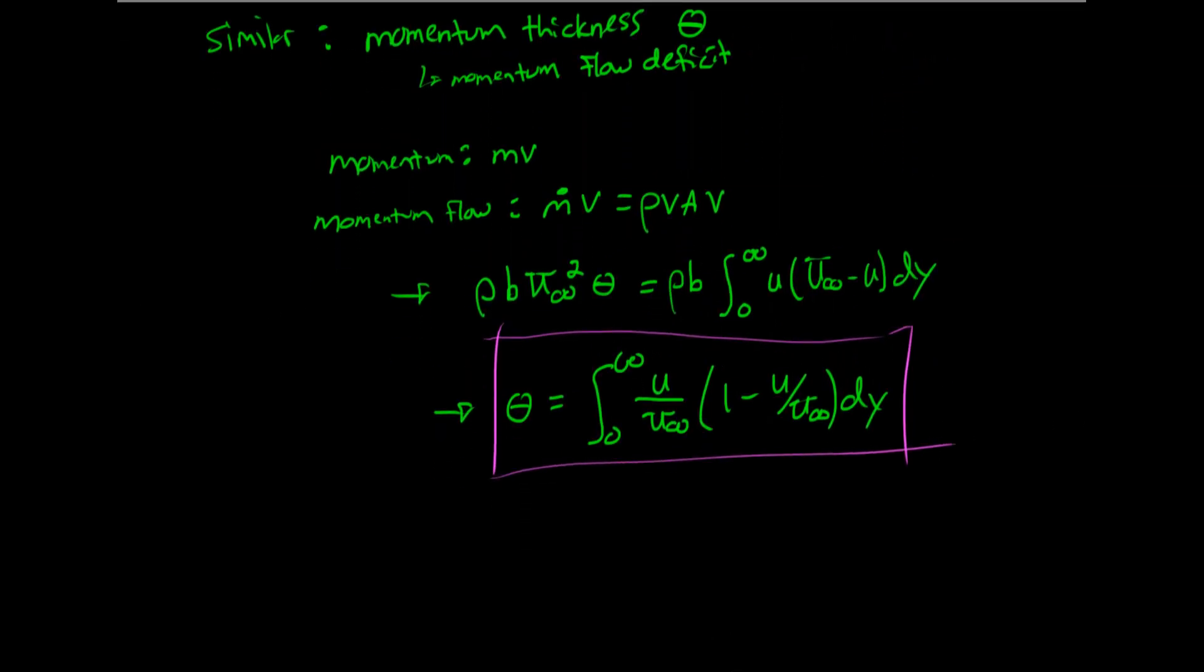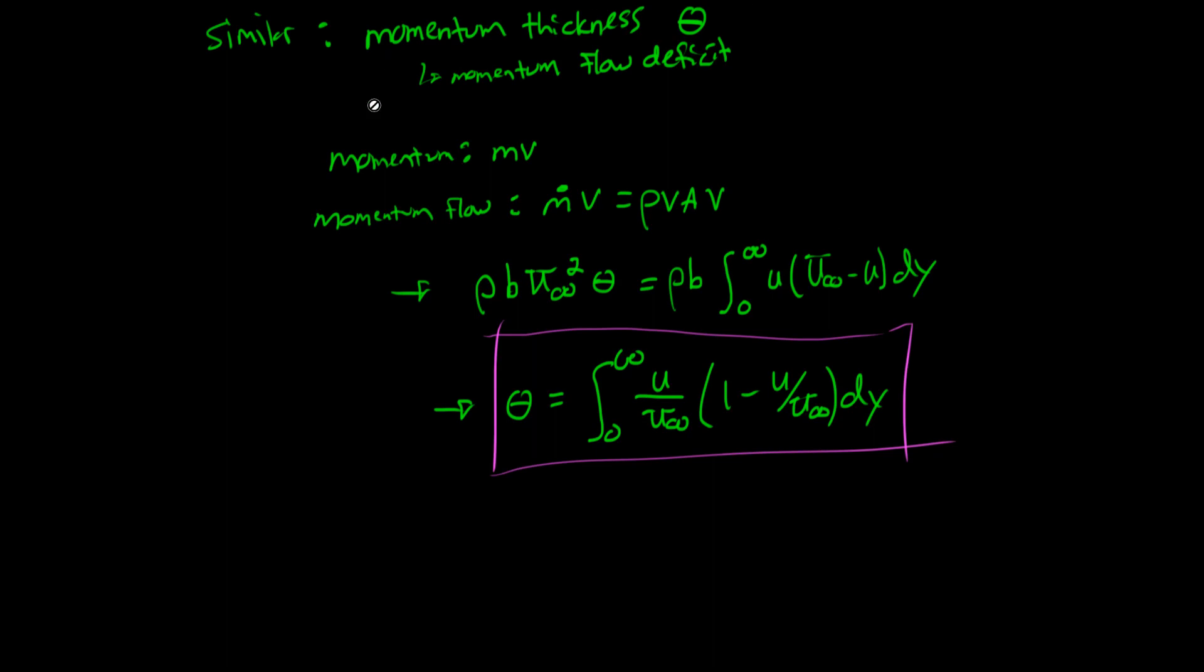Just like we have a mass flow deficit, we have a momentum flow deficit. If you think about it, there's less momentum down in that bottom region. And so in the same way that we can calculate this offset for mass flow, we can calculate one for momentum flow. And this would be the one we'd want to shift the surface by if we wanted to find forces.